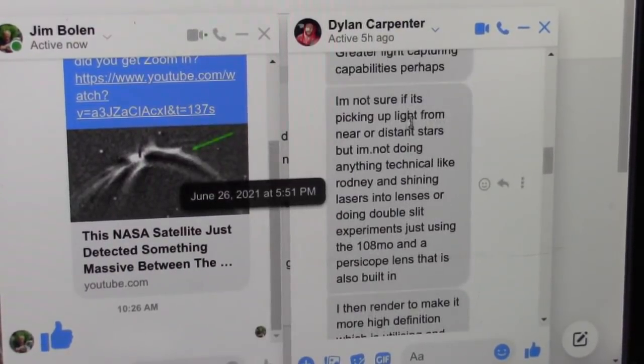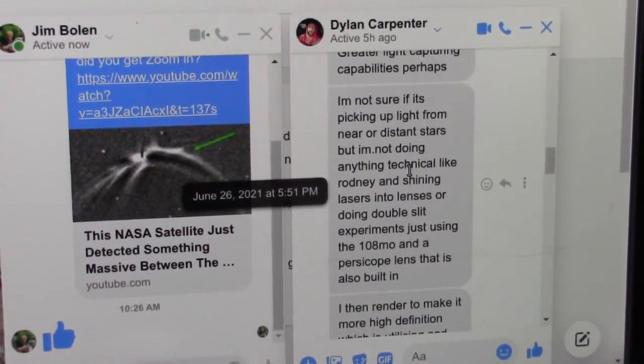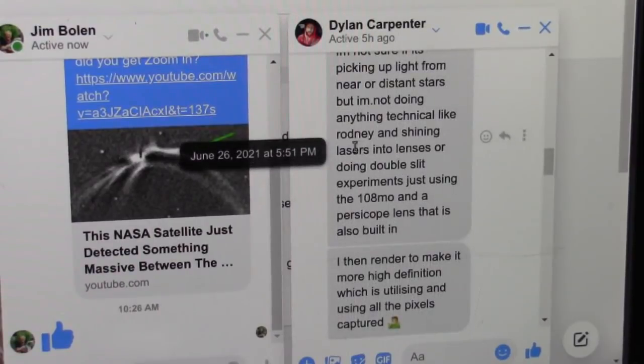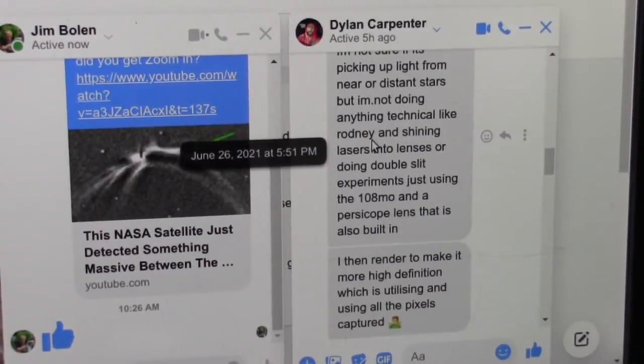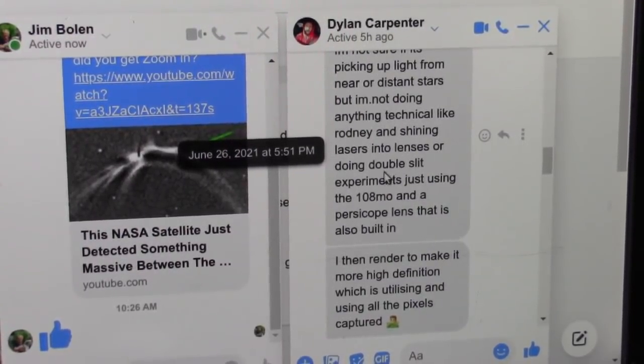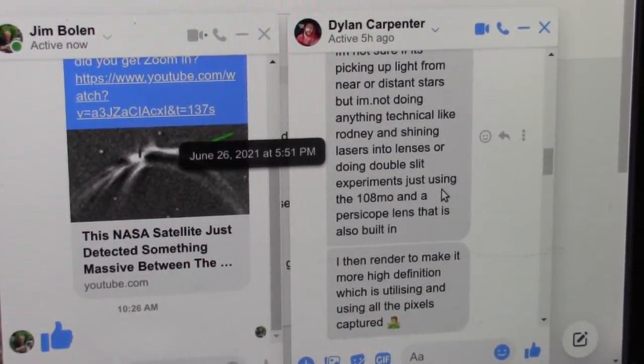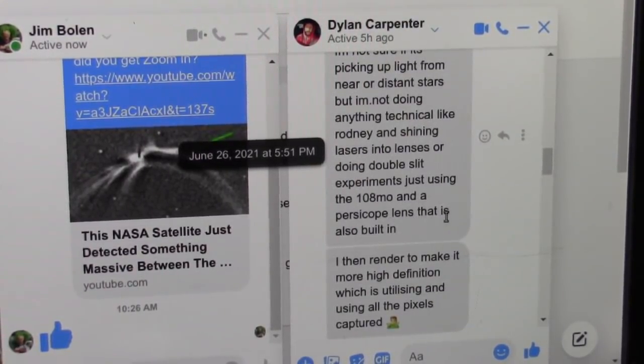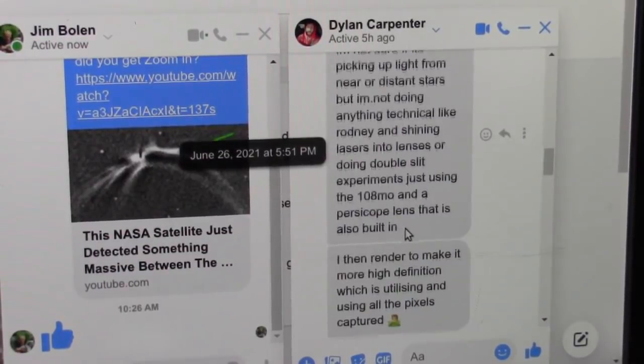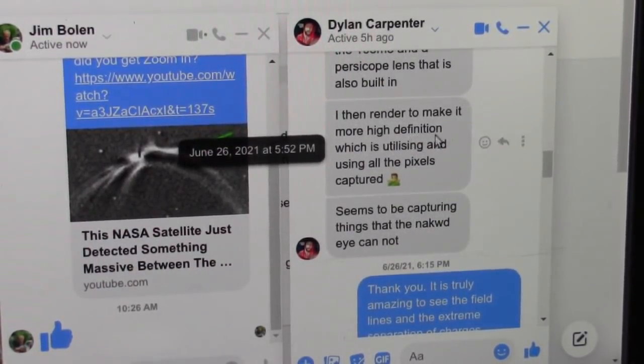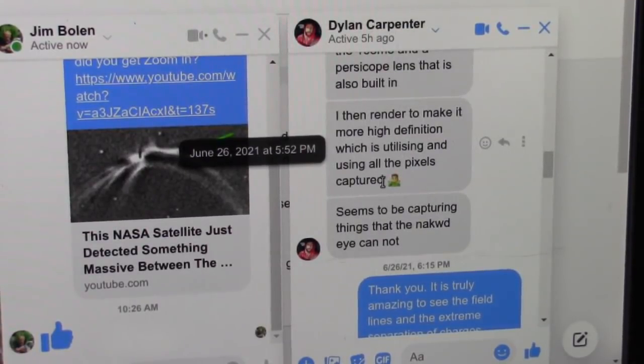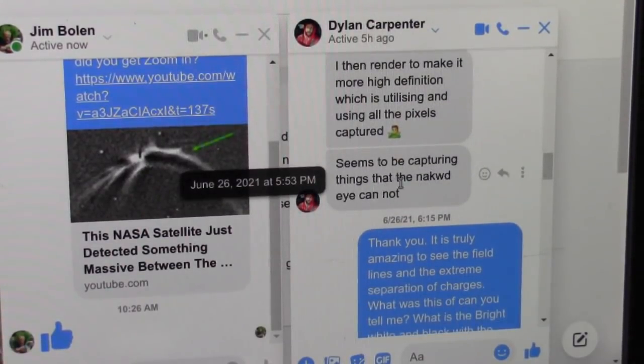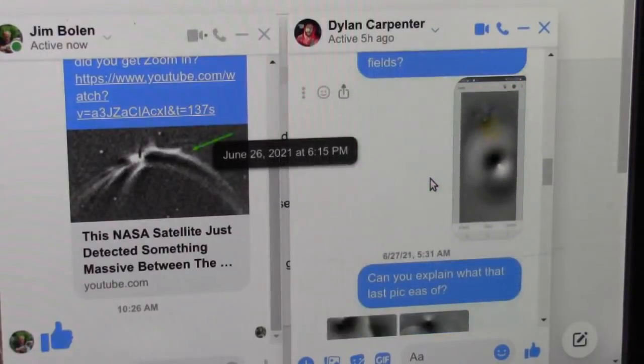And then he says, he's not sure if it's picking up light from near or distant stars, but I'm doing anything technical like Rodney and shining lasers into lenses. He's not doing anything technical like Rodney's doing. Shining lasers into lenses or doing double slits and all that business. He's just using the 108 micron and a periscope lens that is also built into that phone. So, I then render to make it more high-definition, which is utilizing and using all the pixels captured. So, seems to be capturing things that the naked eye cannot. Yes, I absolutely agree.